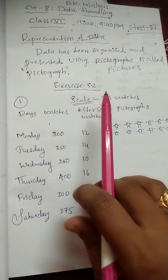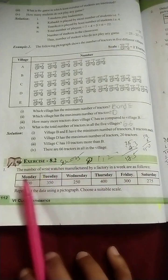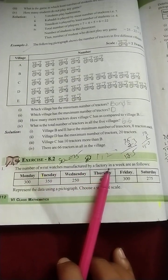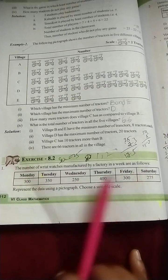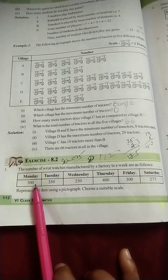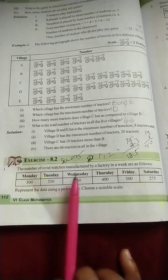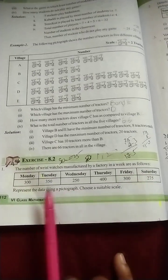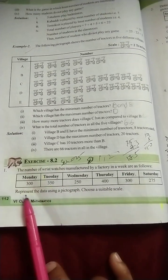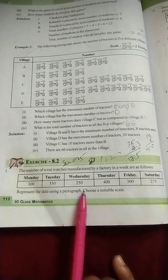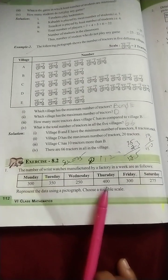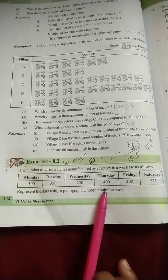Let me show the first question of Exercise 8.2. The number of wristwatches manufactured by a factory in a week are as follows: Monday 300, Tuesday 350, Wednesday 250, Thursday 400, Friday 300, Saturday 275. We need to represent this data using a pictograph, choosing a suitable scale.